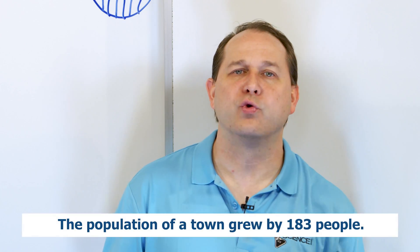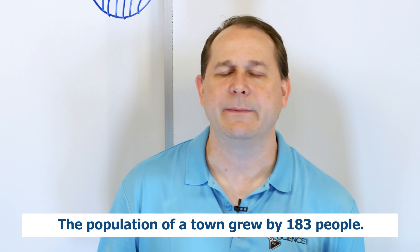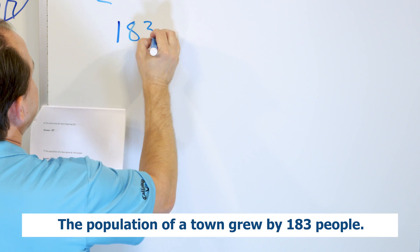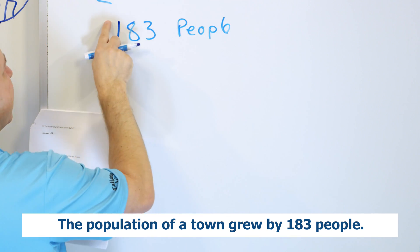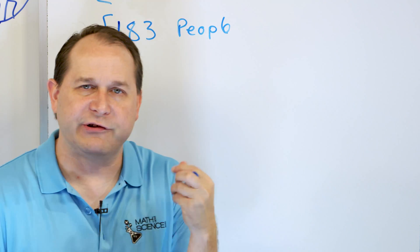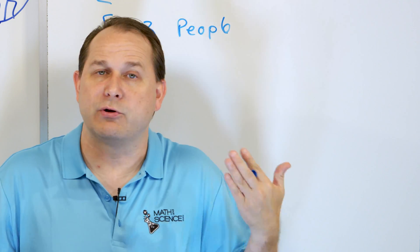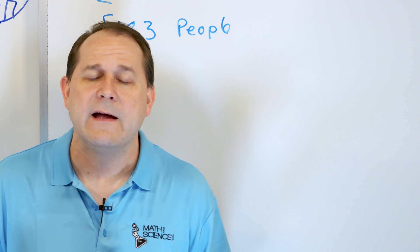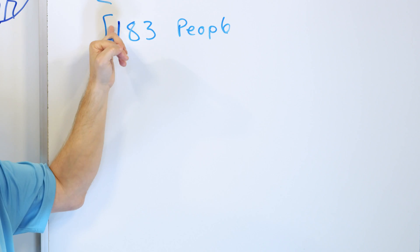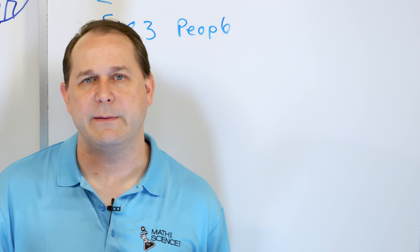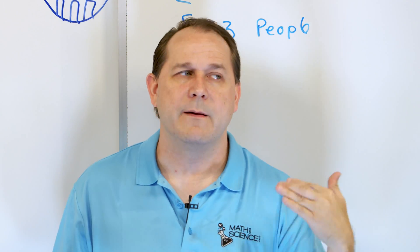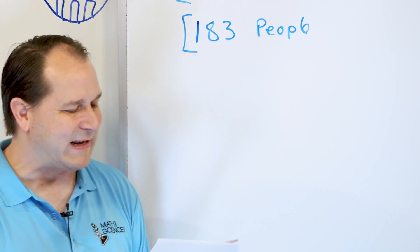Next problem: the population of a town grew by 183 people. If the population gets larger, we treat it as a positive number — positive 183. If the population starts to go down, maybe people are moving away, then we wouldn't say a positive population increase. We'd call it negative — let's say we lost 183 people, so negative 183. That doesn't mean you have a negative person; it just means the population is going down by 183.